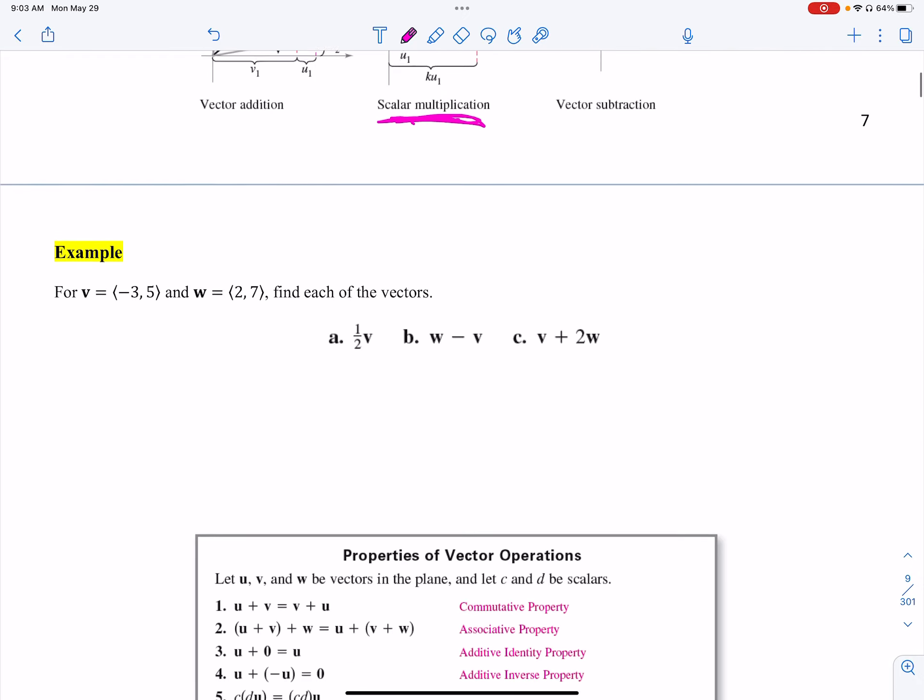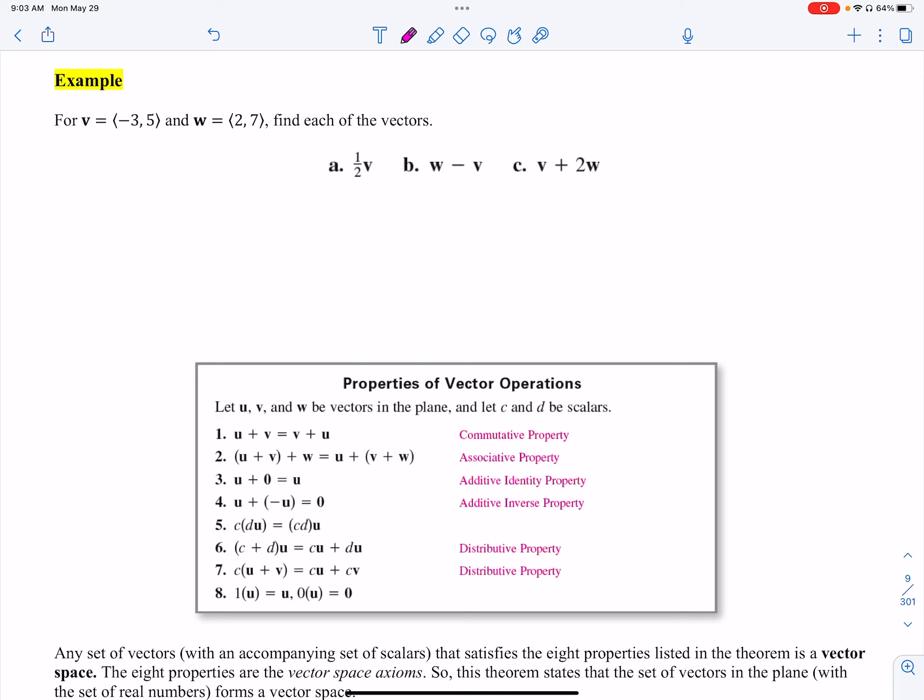Alright, let's work an example of three examples of this, just to show how these things work. So problem A, they gave us v and w. And A says one half v. So I'm just going to work it out the way it looks. One half times v. Make sure you're using angle brackets. And then I just distribute. I got negative three halves, comma, five halves. I think that's a great answer. You do not need to go to a decimal. That's how we multiply by a scalar. It's nice and pretty.